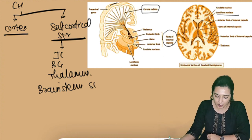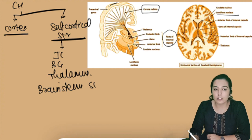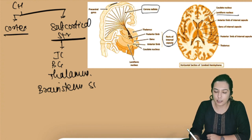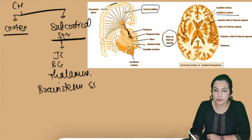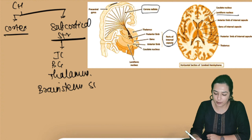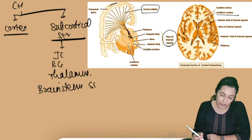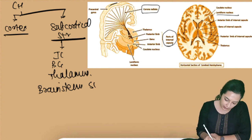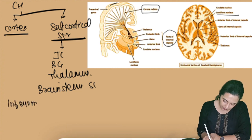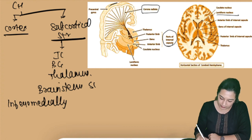Between the cerebral cortex and internal capsule, there are ascending and descending fibers from or to the cerebral cortex via the corona radiata. The internal capsule is present inferomedially in the cerebral hemisphere.